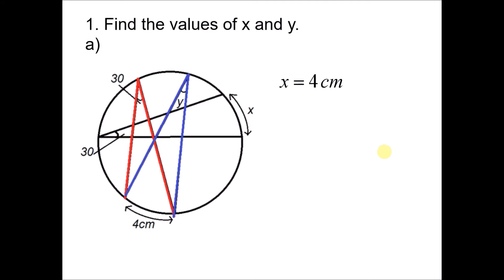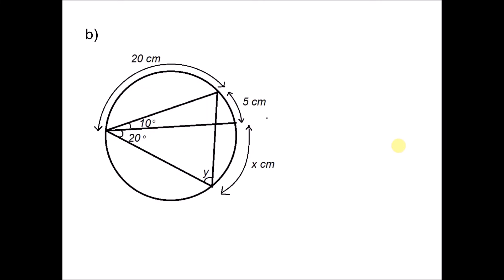Looking at angle Y, which is subtended by the same arc as angle 30°, since angle 30° and angle Y are both subtended by the same arc, they have the same value. So Y equals 30 degrees.